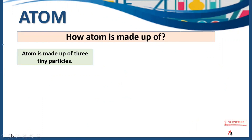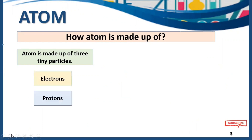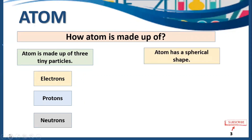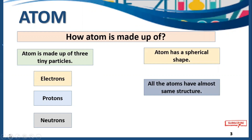An atom is made up of three tiny particles: electrons, protons, and neutrons. Electrons have a negative charge, protons have a positive charge, and neutrons have no charge. An atom has a spherical shape — it's just like a ball.